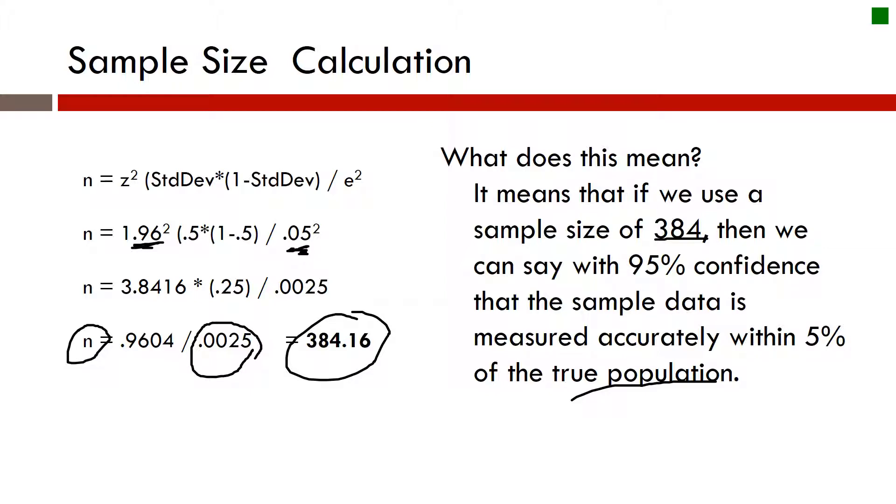So that's two ways for calculating sample size: the confidence interval method, which uses this formula, which is very good to know, and then also the rule of thumb. So the rule of thumb of five observations per item that you have in your survey.